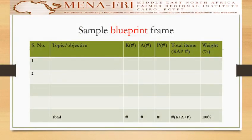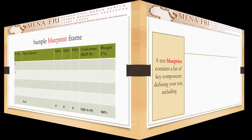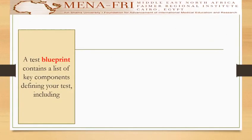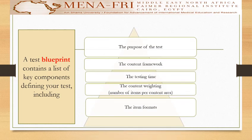This is a sample of a blueprint frame. Next week, we will be able to create one of those blueprint frames. A test blueprint contains a list of key components defining your test. It includes the purpose of the test, the content framework, the testing time, the competency weighting, the number of items per content, and the item format.